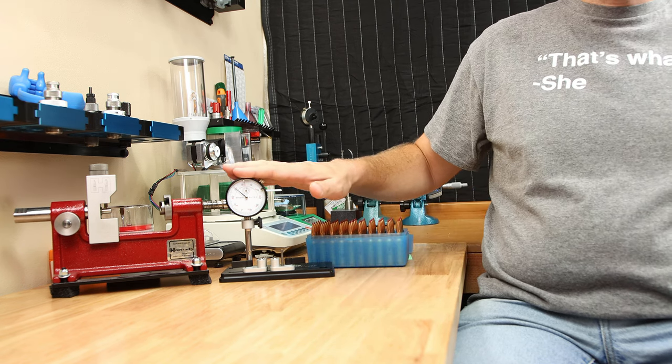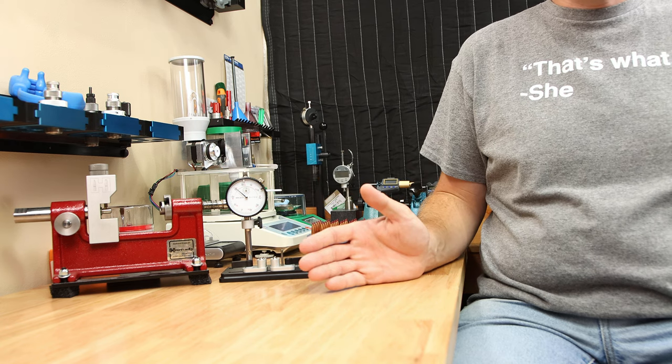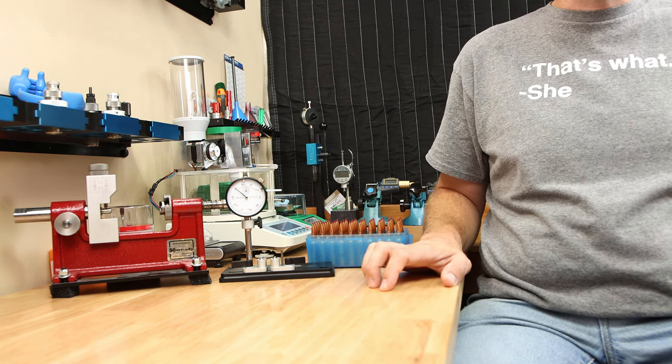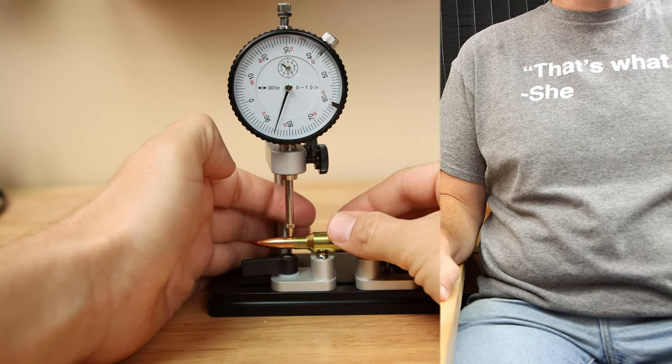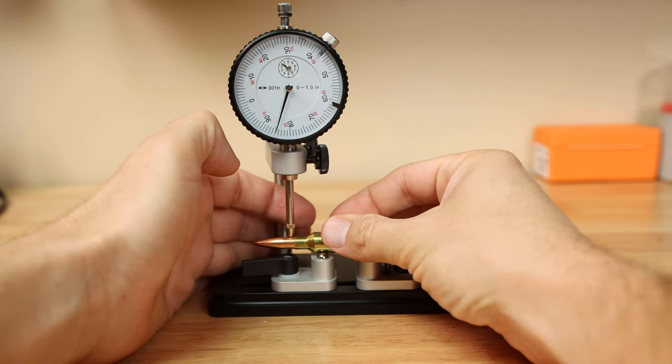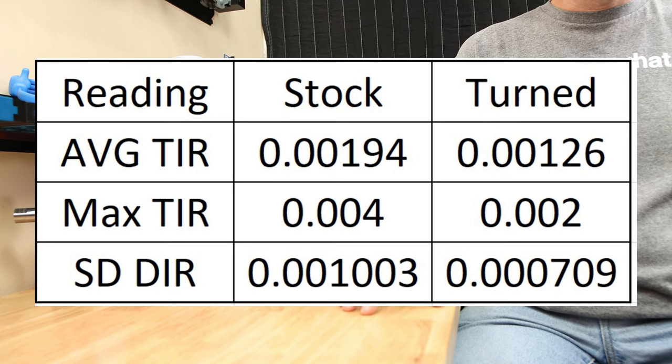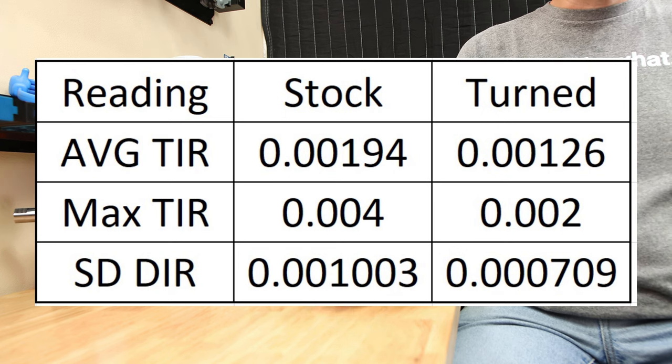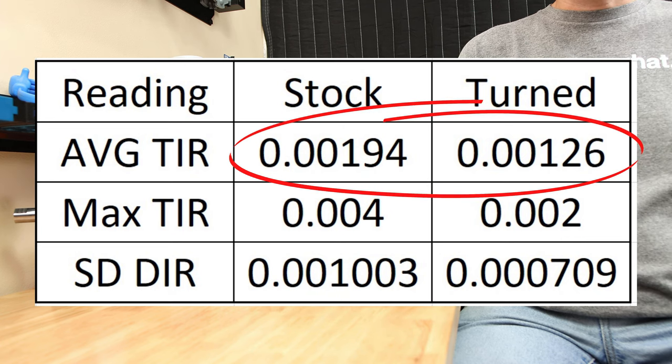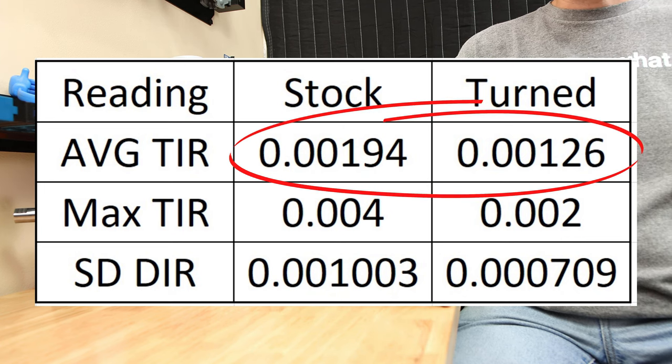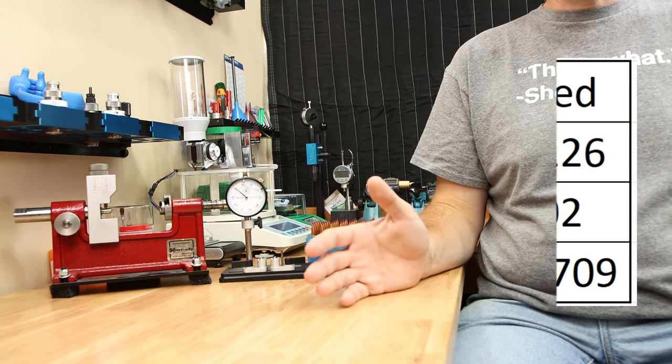But what about our concentricity? Did our concentricity improve? Well, I measured 25 cases turned and 25 cases stock with a projectile seated in the case. And it's clear that the neck-turned brass performs better. The average total indicator runout of the stock brass was just under two-thousandths of runout, but the turn brass was just over one and a quarter.